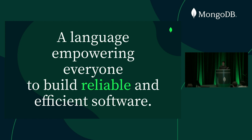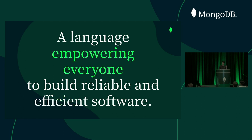Undefined behavior can cause unexpected crashes, security vulnerabilities, and really mysterious bugs. Now, most mainstream programming languages are free from undefined behavior, but a lot of them achieve this by sacrificing a certain amount of efficiency. Rust, on the other hand, strives to be as efficient as C and C++ while still not having any undefined behavior. And Rust strives to make it so that you don't have to be an expert programmer to write safe and fast code, achieved through its novel type system and a super helpful compiler.